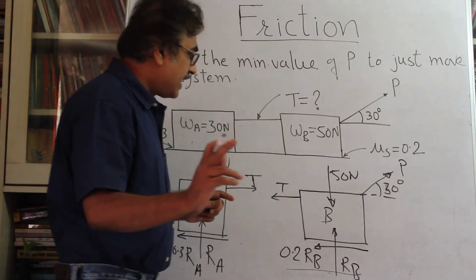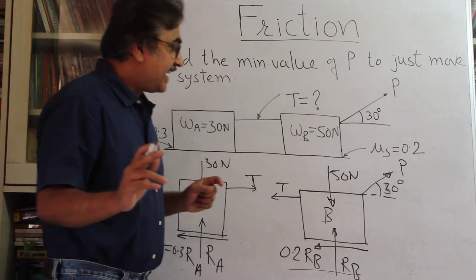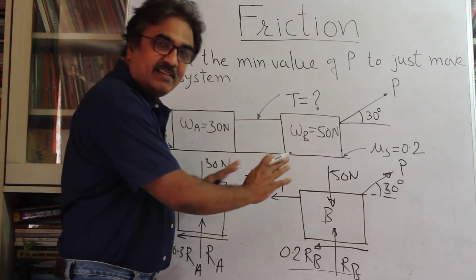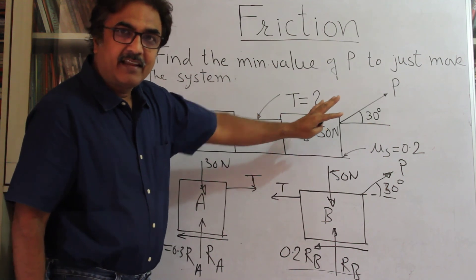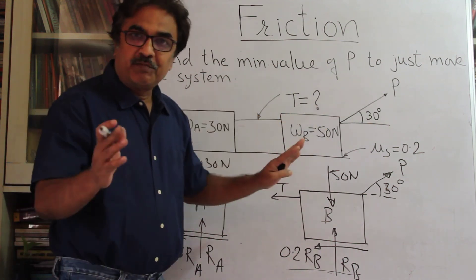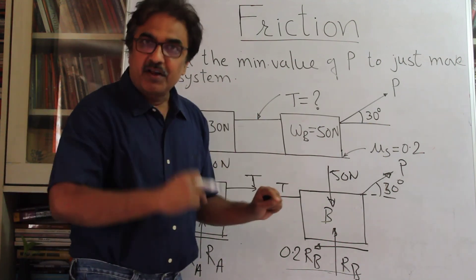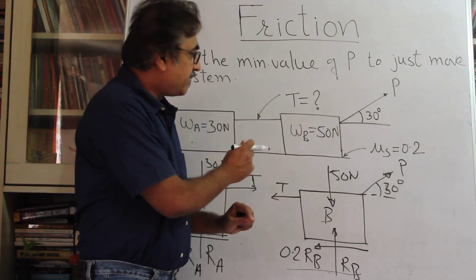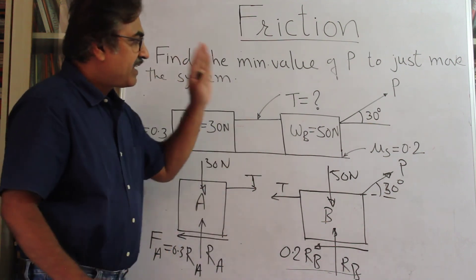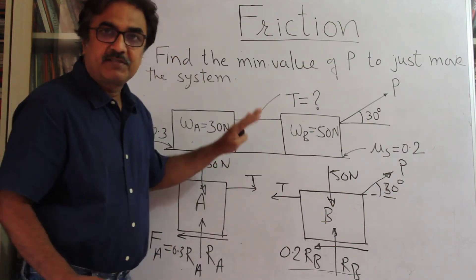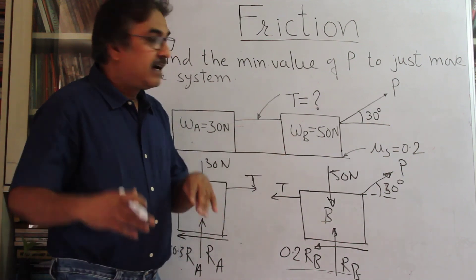Solve this and I think P will be around 11 N, and you can find out T as well. Maybe in the next video I'll give you the answers for this particular problem; otherwise editing takes a lot of time. So this is the way to solve this problem. Let's move on and solve a second problem. Thank you.